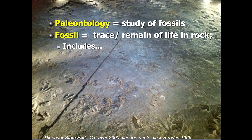This is Dinosaur State Park in Connecticut. In 1966, construction workers putting in a new state building hit a slab of sandstone and found about 2,000 dinosaur footprints — created when dinosaurs frolicked in a floodplain or shallow body of water. There are carnivorous dinosaur tracks, herbivore tracks, and even some alligator tracks. State officials put a dome over the site and made it a park. This is one type of fossil; there are actually many.